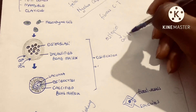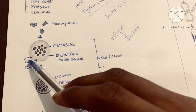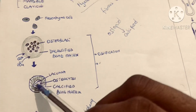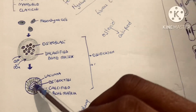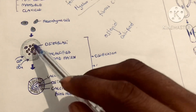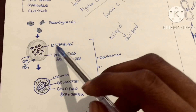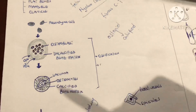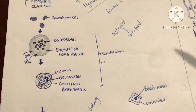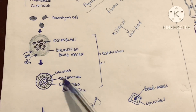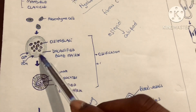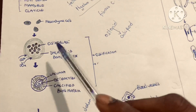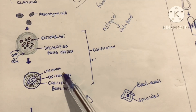This uncalcified bone matrix will become calcified by the deposition of calcium and inorganic phosphates. After calcification of the bone matrix, the osteoblasts become trapped in the bone matrix and then differentiate further into another type of bone cell called osteocytes.